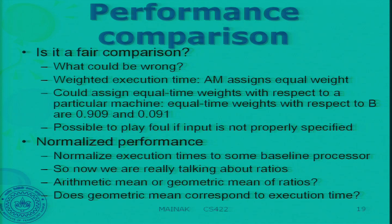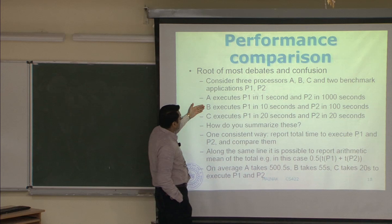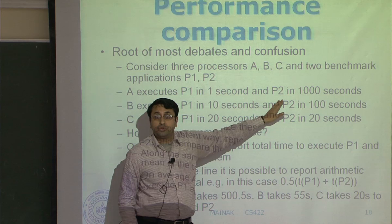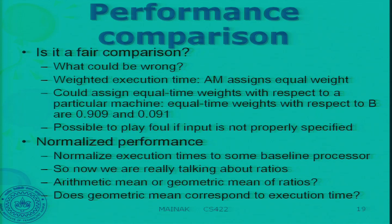Now we are really talking about ratios. For example, in this example, if my baseline is A, I would report the performance of B and C with respect to A. For P1, B is 10 times faster than A. So we are talking about ratios, and the same question arises: how do you summarize ratios? You have options — you can do arithmetic mean or geometric mean. Which one makes sense?